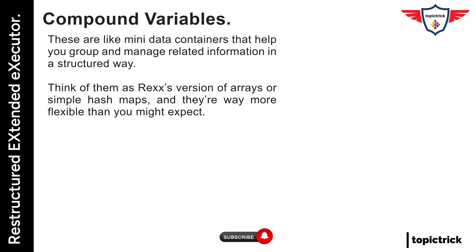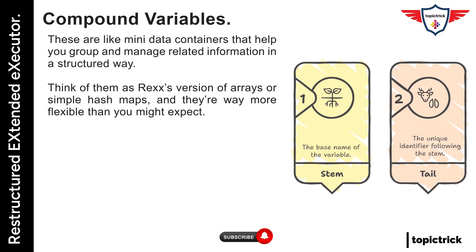Alright, let's talk about something incredibly handy in REXX: compound variables. These are like mini data containers that help you group and manage related information in a structured way. Think of them as REXX's version of arrays or simple hash maps, and they're way more flexible than you might expect.